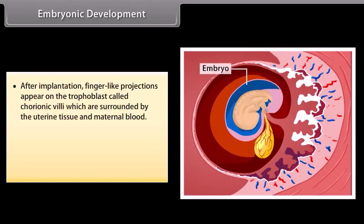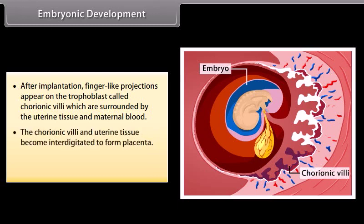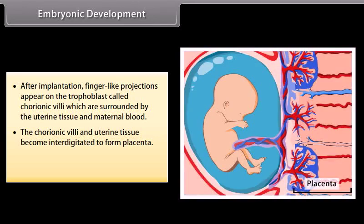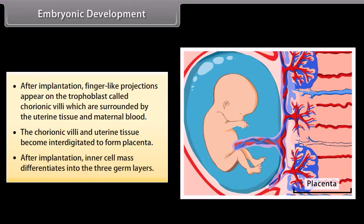Embryonic development: after implantation, finger-like projections appear on the trophoblast called chorionic villi, which are surrounded by the uterine tissue and maternal blood. The chorionic villi and uterine tissue become interdigitated to form the placenta. After implantation, the inner cell mass differentiates into three germ layers.